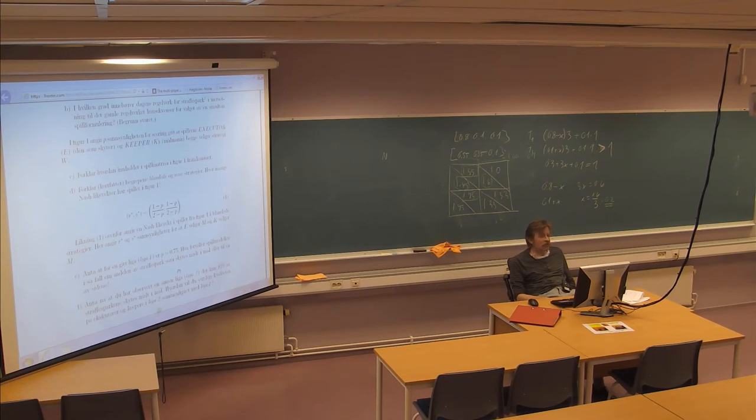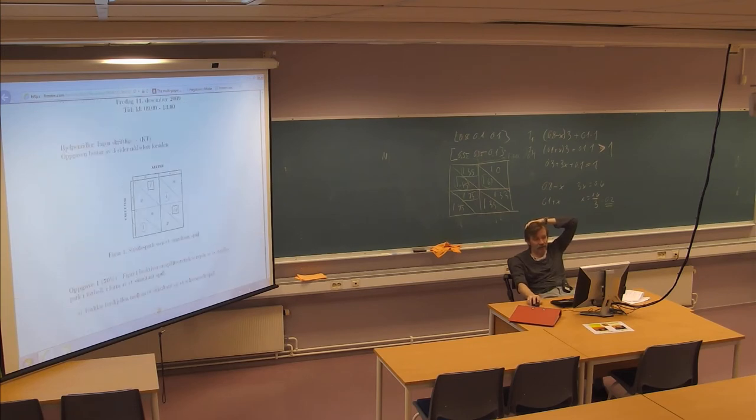Then we move into C. In C there is a text here, starting here. In figure 1, this P gives the probability of a goal given that the player's executor E, the guy who shoots, and the keeper K, the goalkeeper, both choose strategy W. So I define here the meaning of P. You really don't need to remember that. That is given here as information for you. And based on that information, you are asked to explain the content in the game matrix in figure 1.